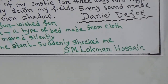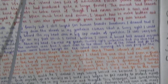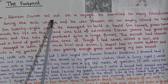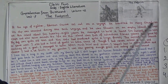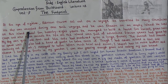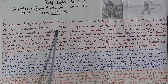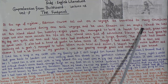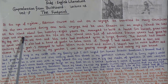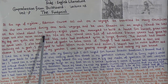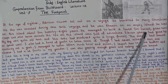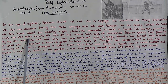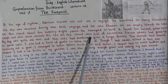Now you can easily understand our today's story. At the age of 18, Robinson Crusoe set out on a voyage — 'set out' means start, 'voyage' means sea journey. He traveled to many countries. His ship was wrecked — ruined heavily — during one such voyage and he was thrown on an empty island. He lived on this island for about 28 years. He managed to build a house, grow some crops, and raise animals. His life on the island was full of adventure.